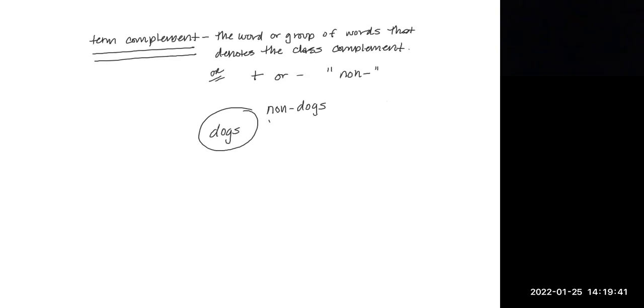We're just going to say non dogs. So non dogs becomes its own term dogs, non dogs. And if we were looking at dogs as D, it would become non D with a little slash between it.